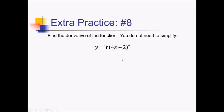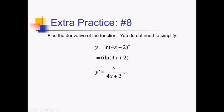To take the derivative of this problem, I'm going to start by simplifying using the pop-out rule. I'm taking the ln of something to the sixth power, so the sixth power pops out, leaving 6 ln of whatever the something was. Using the ln rule, I have 6 over 4x plus 2, times a tail of 4, because the derivative of 4x plus 2 is 4.